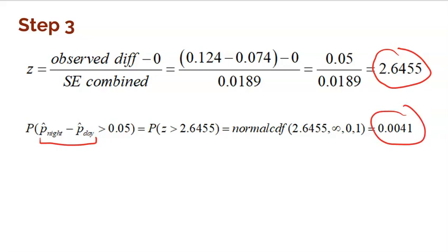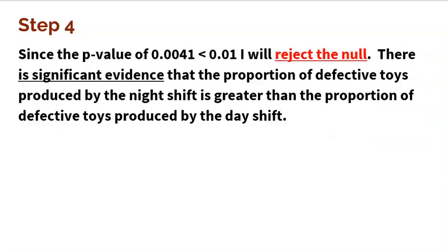That means the probability of my sample occurring, or something more extreme, is pretty unlikely assuming the null is true. But it did in fact happen. Since something very significant happened, I'm going to reject the null. Since my p-value of 0.0041 is less than my alpha of 0.01, I reject the null.